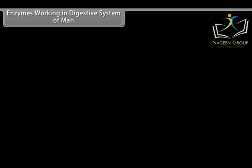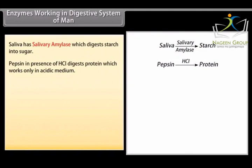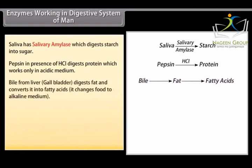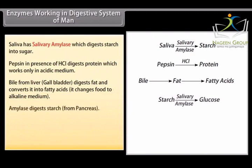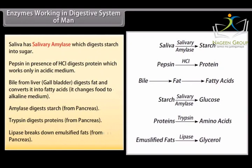Enzymes working in the digestive system: saliva contains salivary amylase which digests starch into sugar. Pepsin, in the presence of HCl, digests proteins and works only in acidic medium. Bile from the liver and gallbladder digests fat, converting it into fatty acids, and changes food to an alkaline medium. Amylase from the pancreas digests starch; trypsin from the pancreas digests proteins; and lipase from the pancreas breaks down emulsified fats.